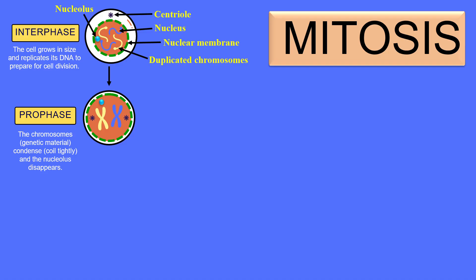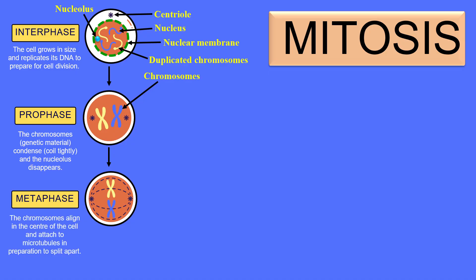The first phase of mitosis is prophase. Here the cell starts to lose the nuclear membrane and nucleolus, and the genetic material — the chromosomes — condenses and takes the shape of proper chromosomes, as you can see in the diagram. The nuclear membrane and nucleolus disappear at the late prophase.